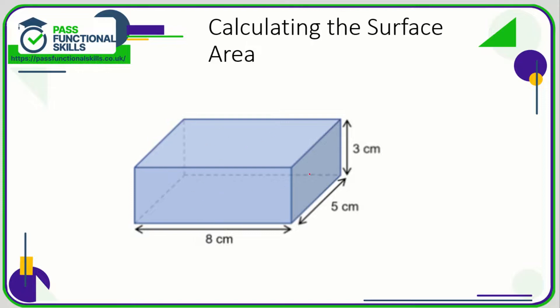Two identical rectangles making up both sides, five by three, and a front and back which are eight by three. Let's look at the top and the bottom. The top and the bottom is eight by five.